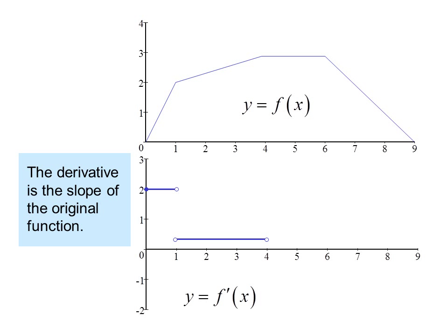From 1 to 4, the slope is 1/3, so the derivative is 1/3. From 4 to 6, the slope is 0, so the derivative is zero.